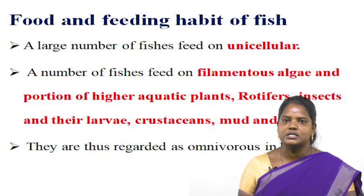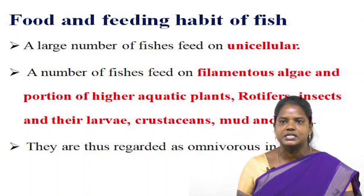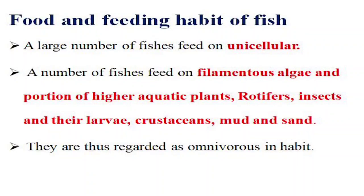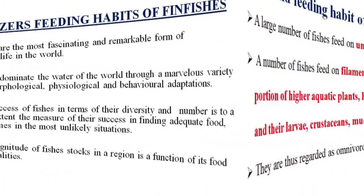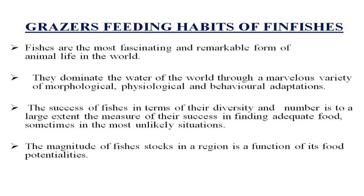A large number of fishes feed on unicellular organisms, filamentous algae and portions of higher aquatic plants, rotifers, insects and their larvae, crustaceans, mud and sand — and are thus regarded as omnivorous in habit. Fishes are the most fascinating and remarkable form of animal life in the world, dominating the waters through a marvellous variety of morphological (external characters), physiological (internal characters or anatomy), and behavioural adaptations. The magnitude of fish stocks in a region is a function of its food potentialities.